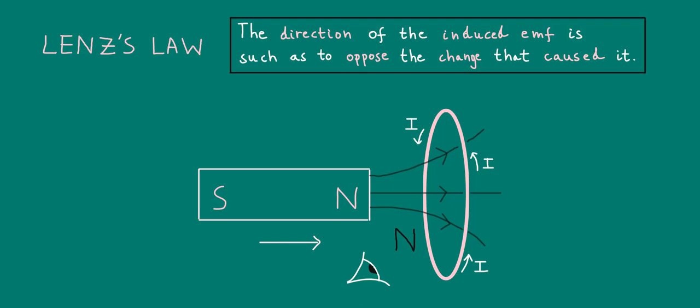What if the bar magnet moves away from the coil? Pause the video and have a think about this. In this case, the induced current would flow clockwise, making the left end of the coil a south pole. This would thus magnetically attract the bar magnet and oppose its motion to the left.